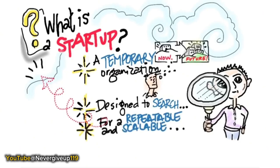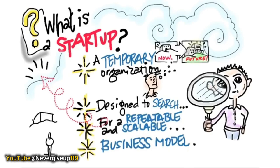Scalable means I put a dollar in, I get two dollars out — or maybe ten dollars out. I better not be losing money on a continual basis, or I'm an out-of-business startup. So I'm searching for something repeatable and scalable, and what I'm searching for is the business model. That business model search is the basis of the rest of the class.